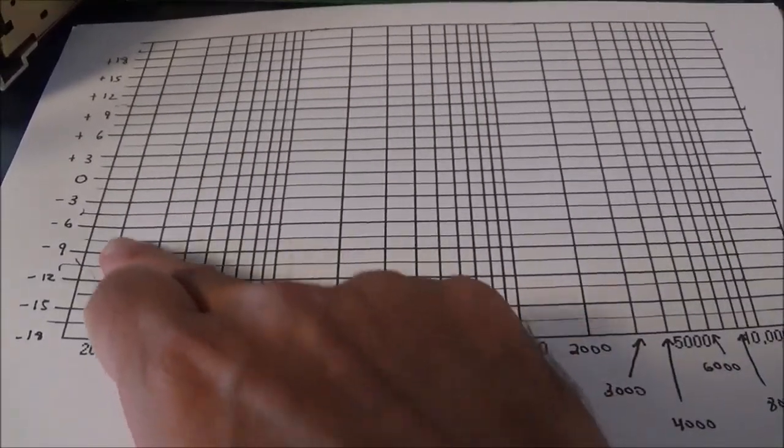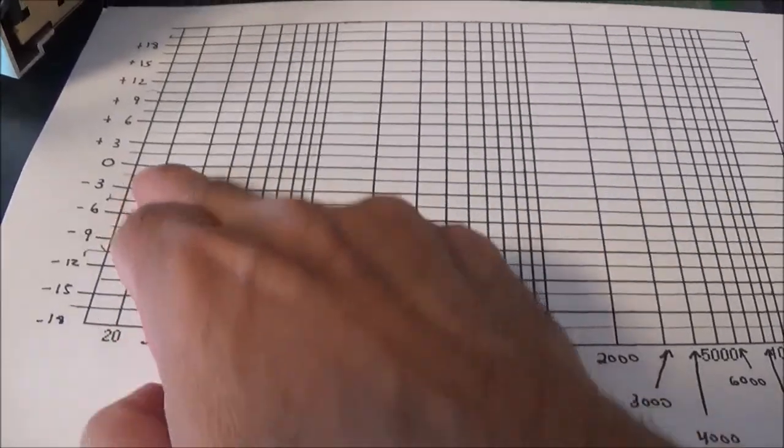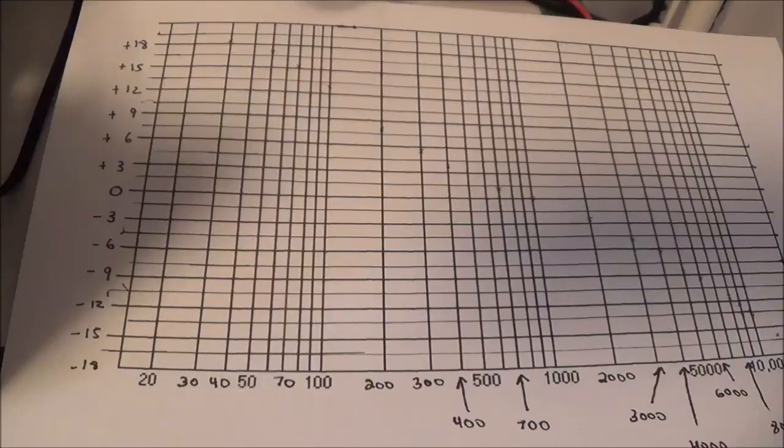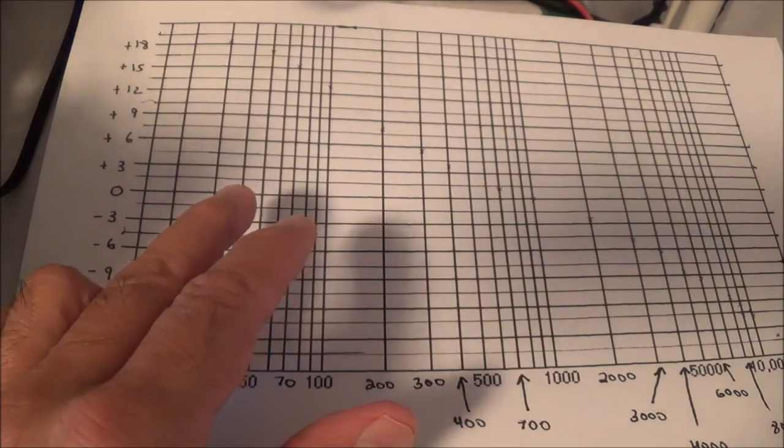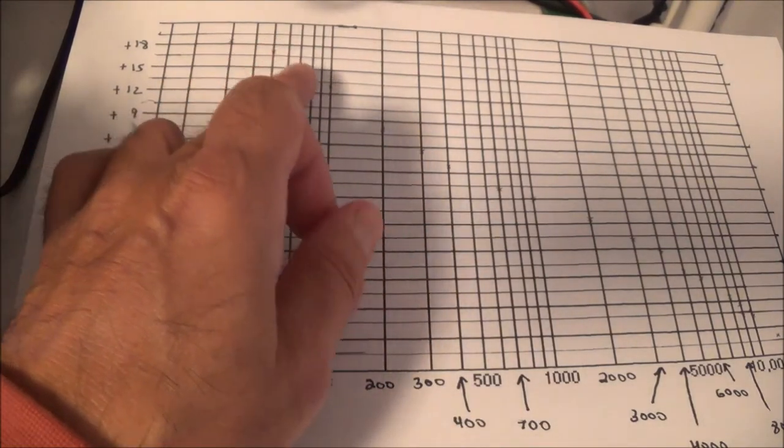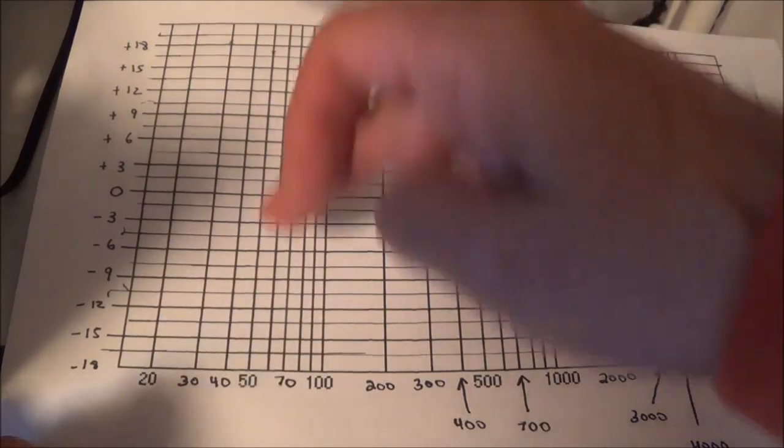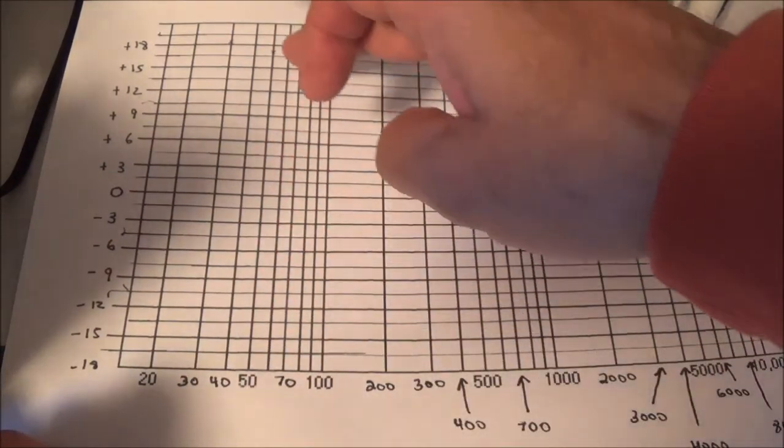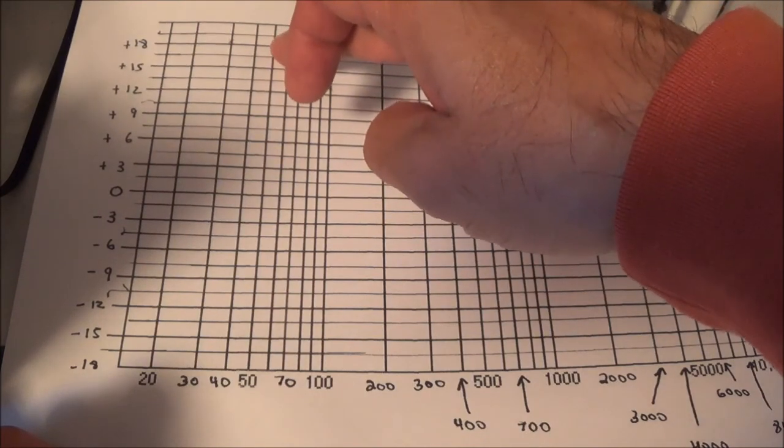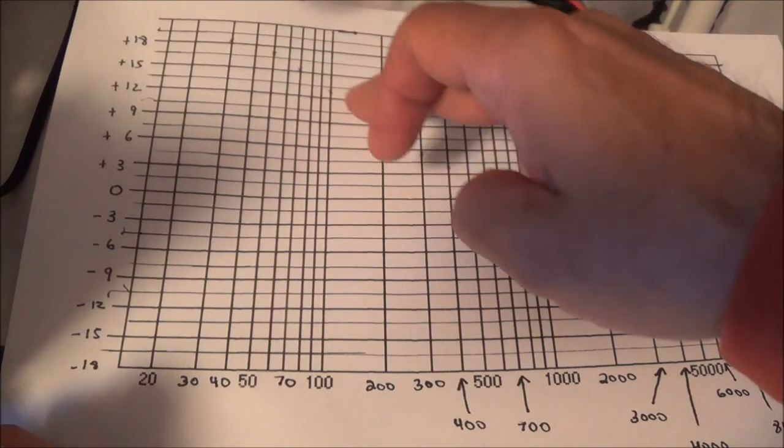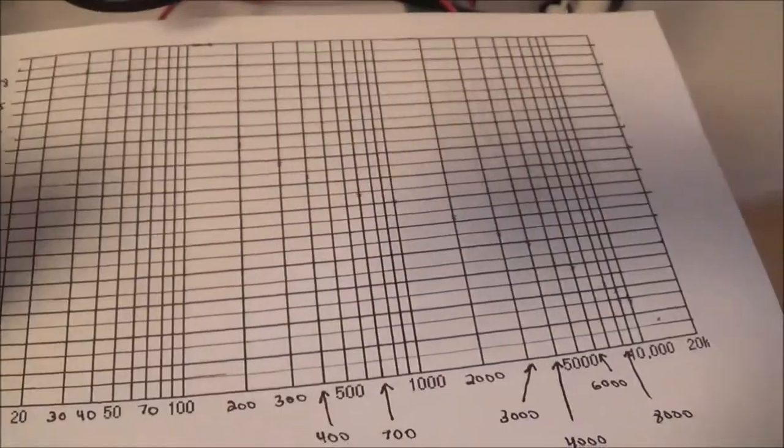And also I put in dBs here, and I got zero as a reference. I've also already started plotting in the RIAA equalization curve, which starts up here at, I think it's about, because the bass boost, it's gonna be about I think around 18 dB. And then it's gonna continue to drop, it's gonna look something like down here at the end here.